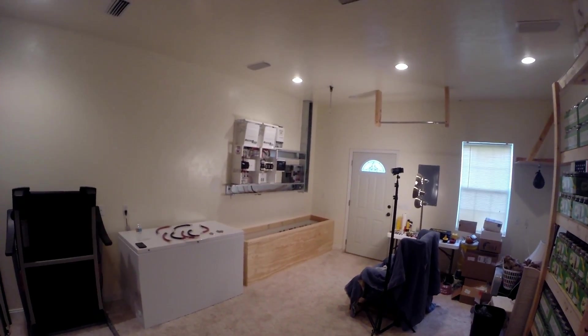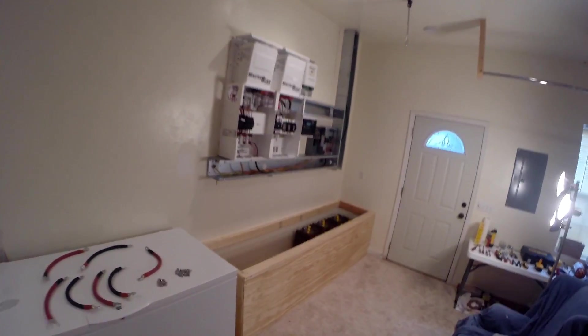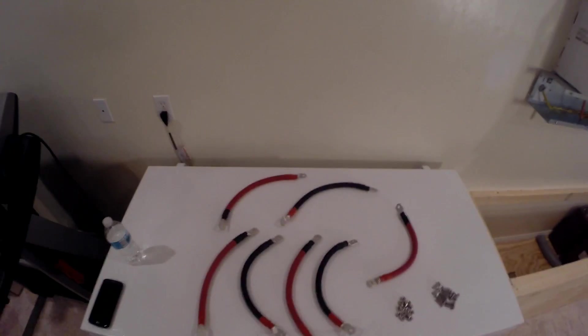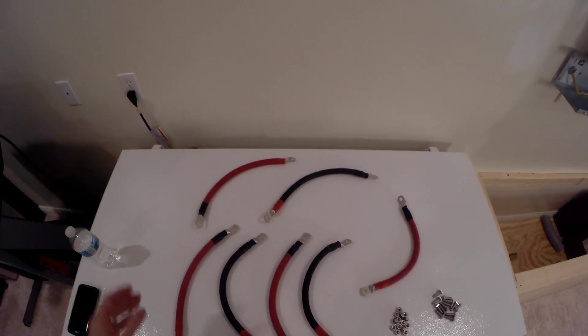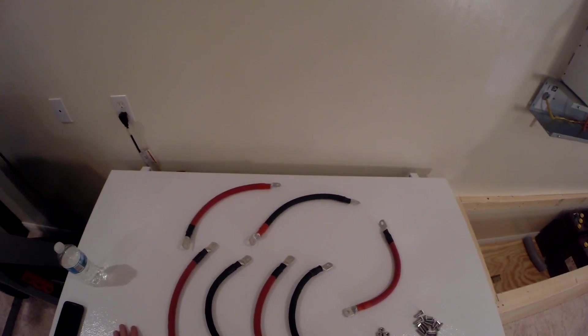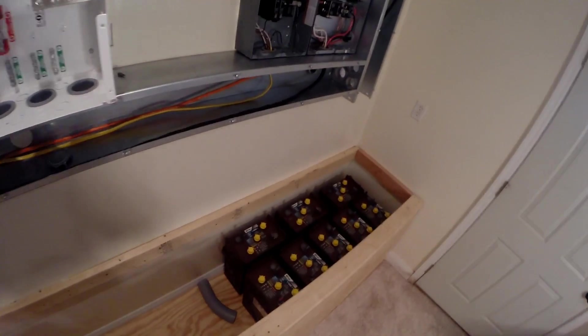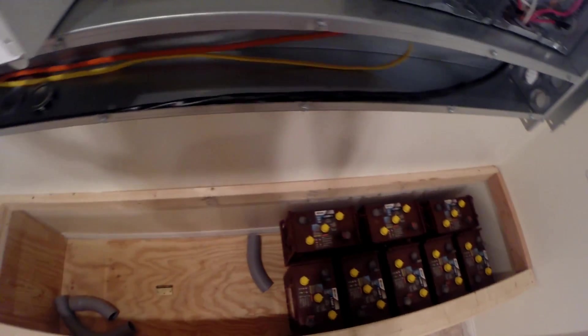Today we're going to work on wiring up the battery bank. Here's some cable with four gauge lugs crimped on - you can see a video on that. Got the bolts and half of the batteries in the battery box.